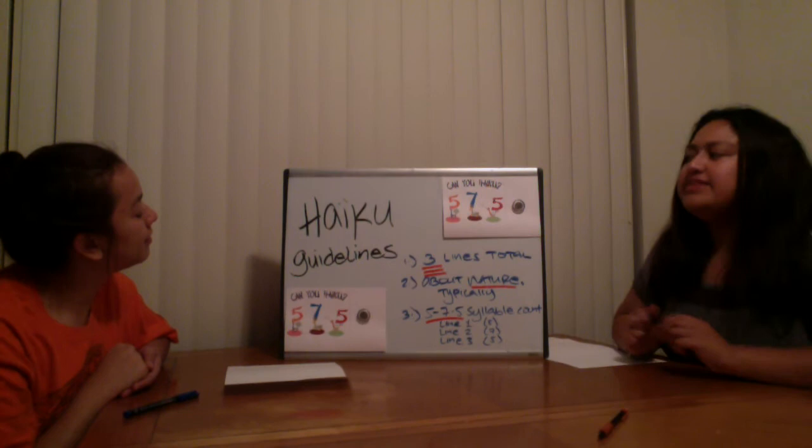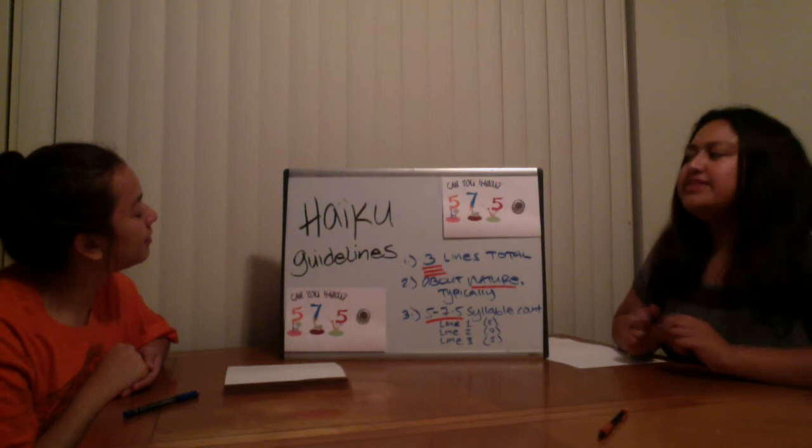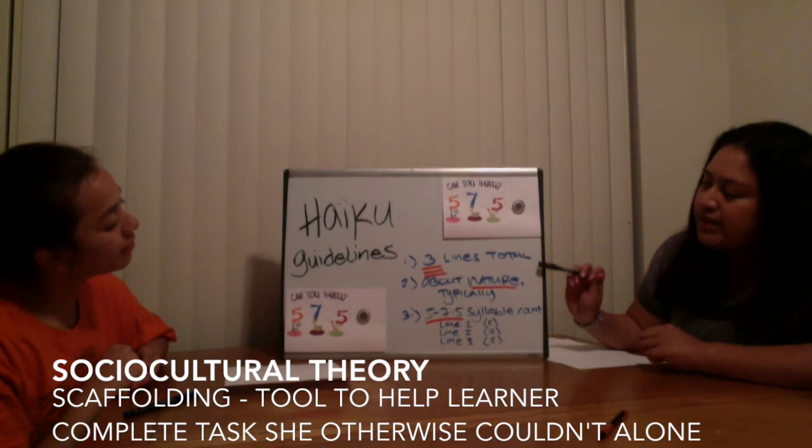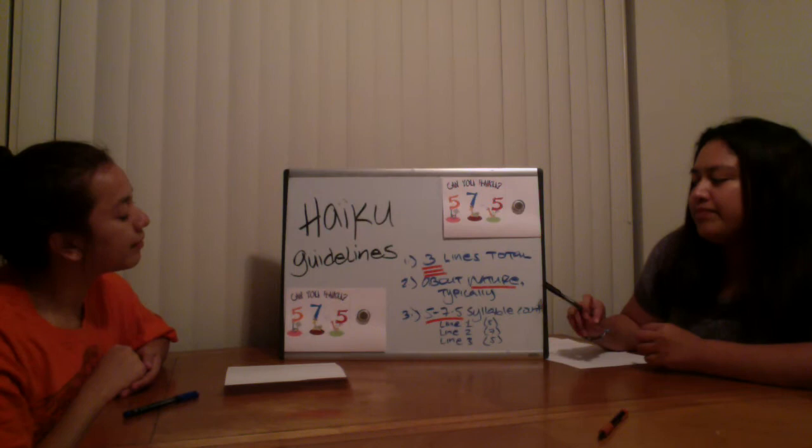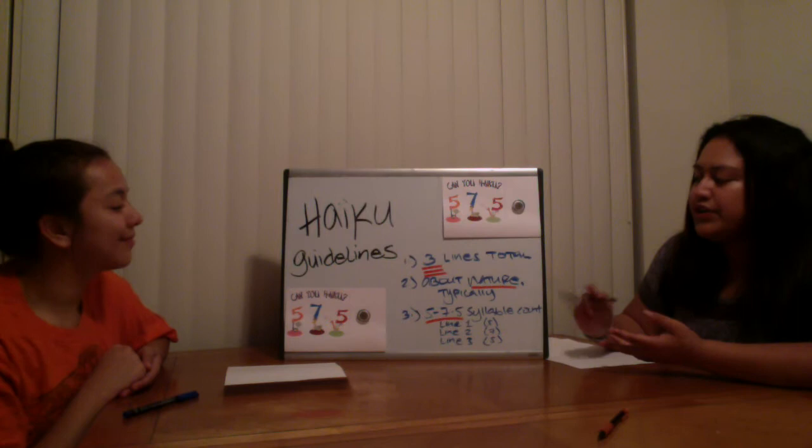So these are the guidelines on how to write a haiku. First, there are three lines total. It's typically about nature, but it can be about anything. Usually you'll see words about the seasons — summer, fall, winter, spring — or trees and flowers, stuff like that, leaves.